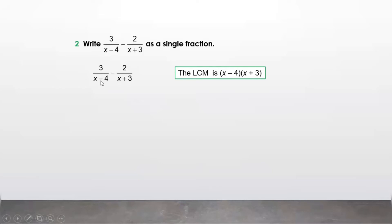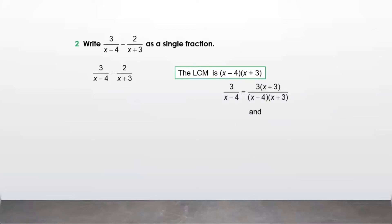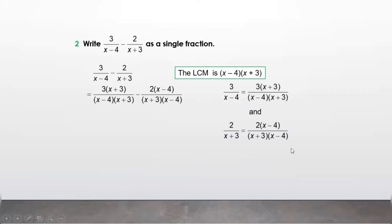That means we multiply the first fraction by (x plus 3) in numerator and denominator, and the second fraction by (x minus 4). So 3 upon (x minus 4) becomes 3(x plus 3) upon (x minus 4)(x plus 3), and 2 upon (x plus 3) becomes 2(x minus 4) upon (x plus 3)(x minus 4). Now we subtract these two fractions.